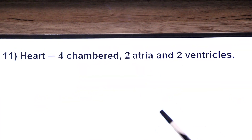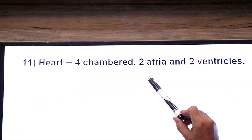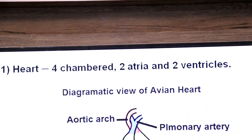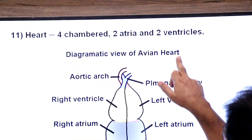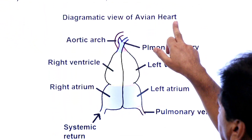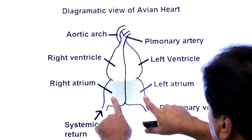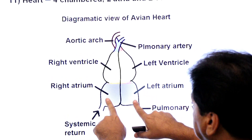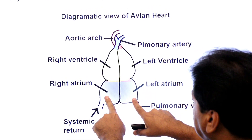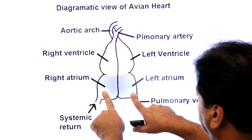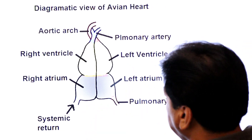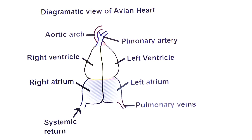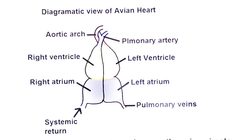Dear students, the bird's heart has four chambers — two atria and two ventricles: right atrium, left atrium, right ventricle, and left ventricle. Look at the diagram showing the avian heart. There is complete double circulation in birds.